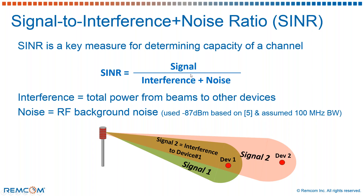Not just the signal power, which is in the numerator, but also the interference and the noise are a key part of the signal interference plus noise ratio. In our case, the interference is the total power from all of the beams that we have formed with this beamforming to the other devices.